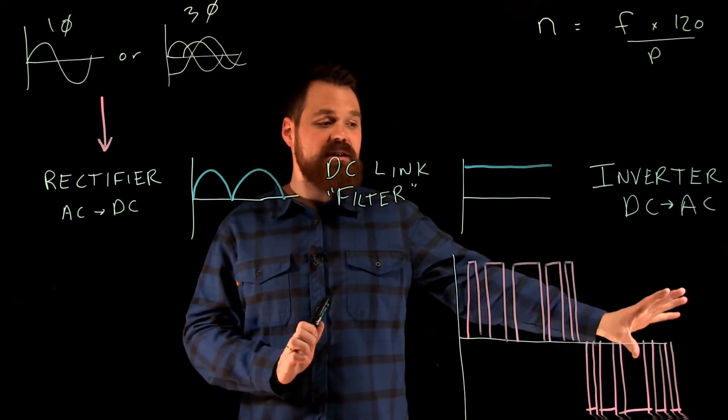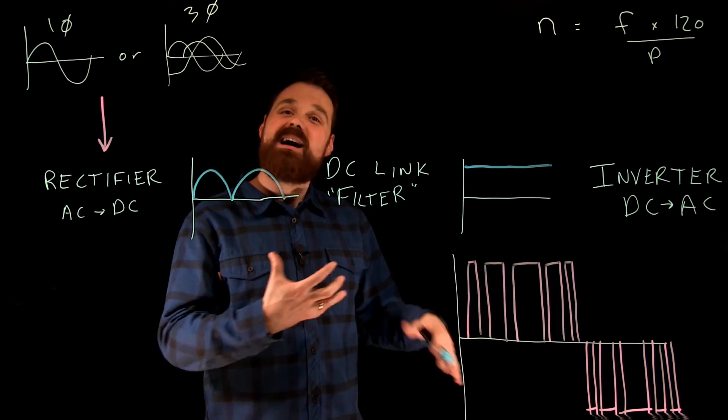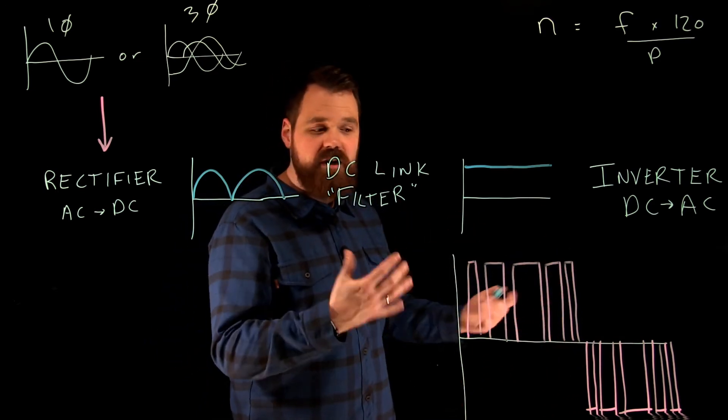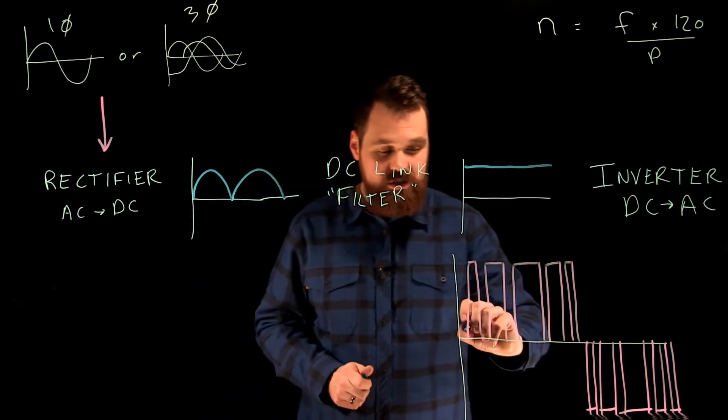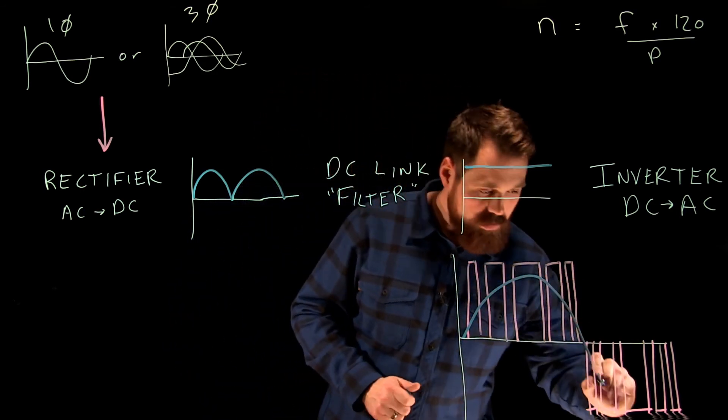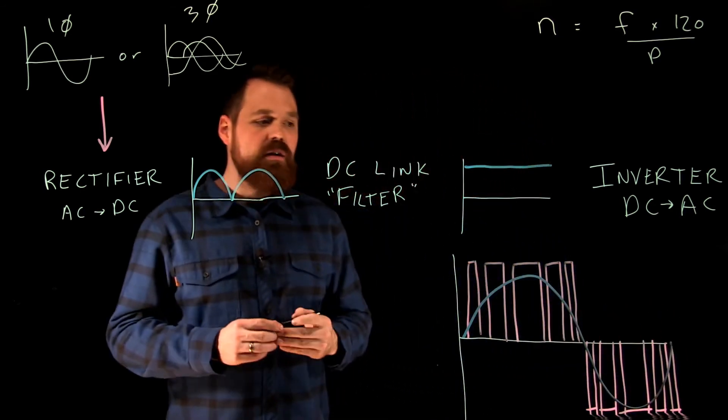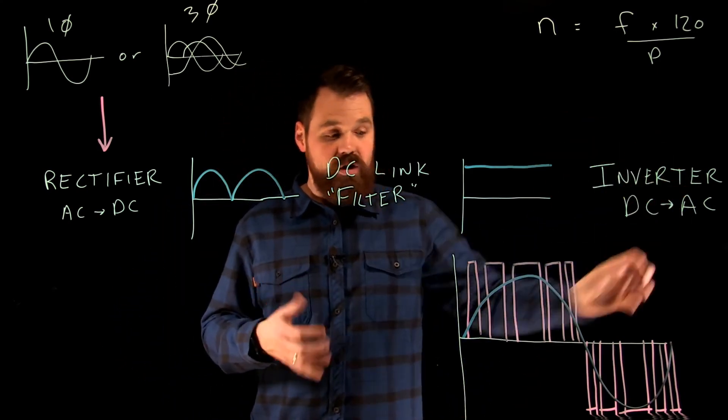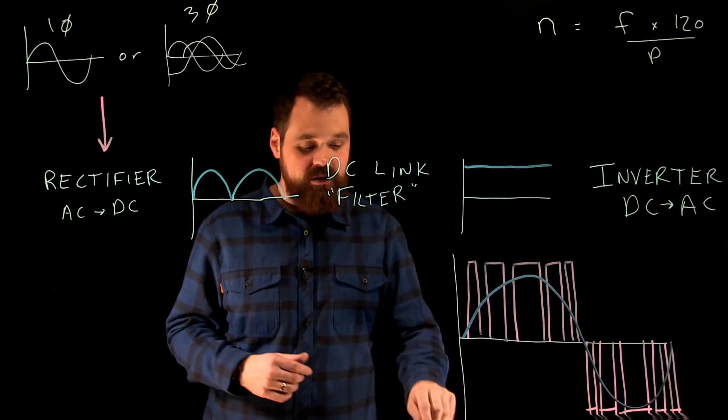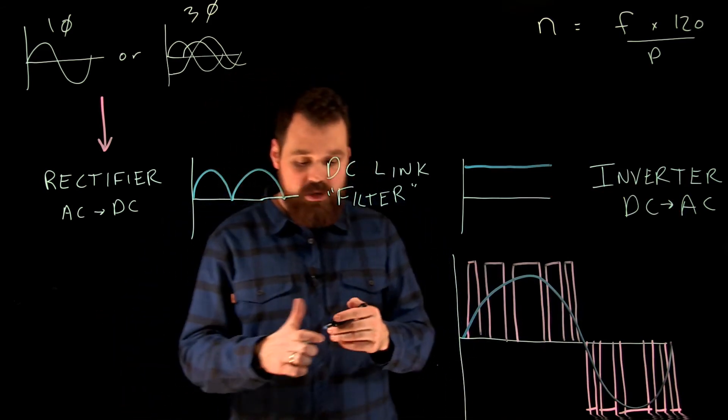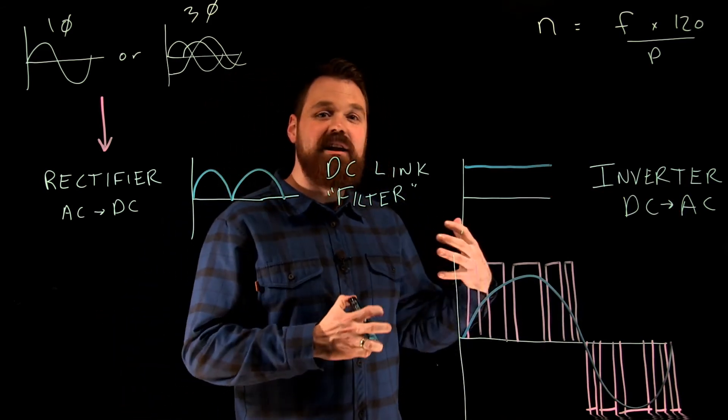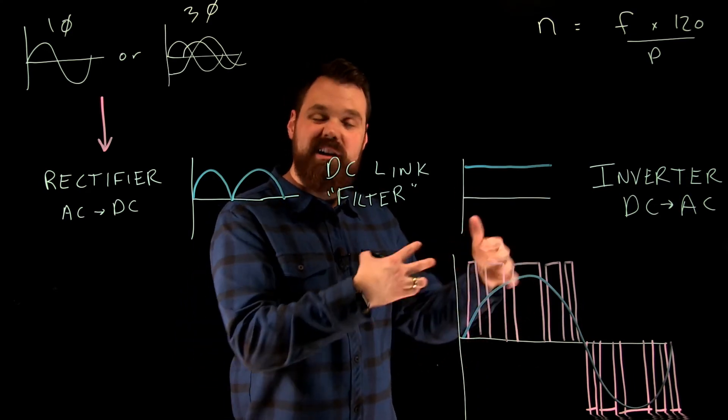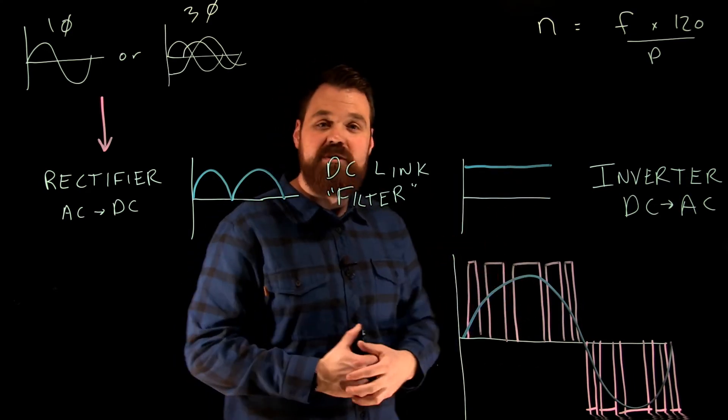Because this is happening so quick, what our load sees—the output of our VFD, which will be a three-phase motor—is it actually sees three very nice sine waves. The inverter creates three of these exactly 120 degrees apart, which gives us a really nice clean three-phase sine wave with an adjusted voltage based on the frequency that it's outputting.